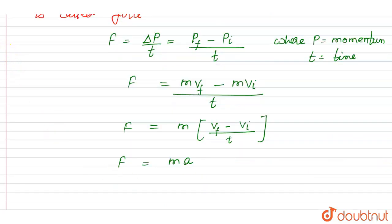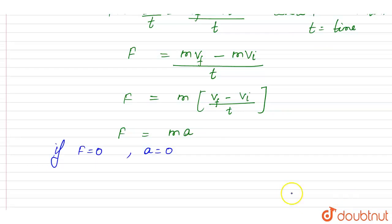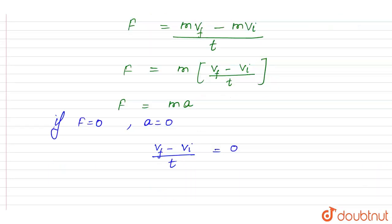Now, if F is equal to 0, then a is equal to 0. That means (v final minus v initial) divided by time t is equal to 0, which means acceleration is equal to 0. From this equation, it is clear that v final is equal to v initial.